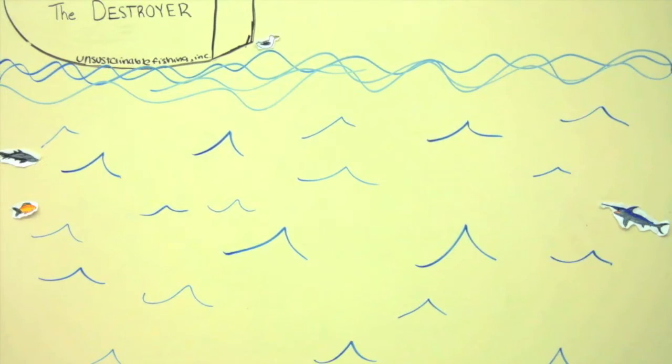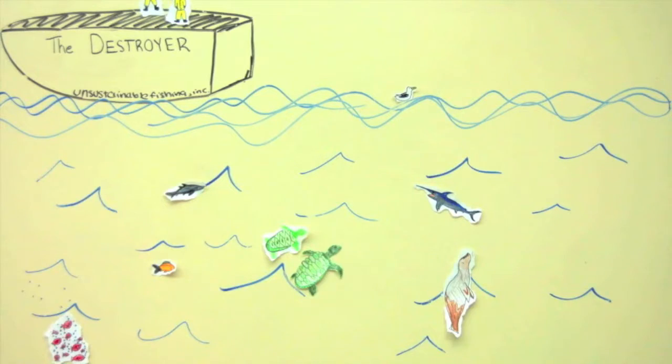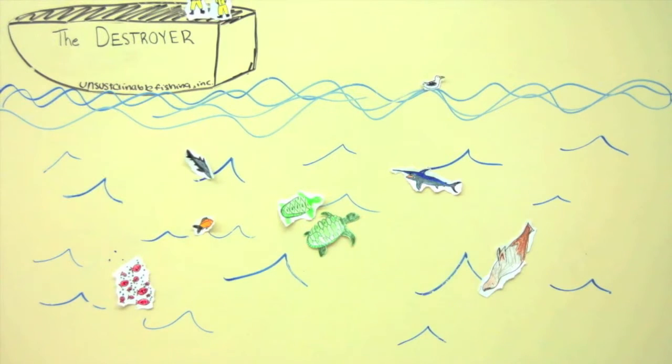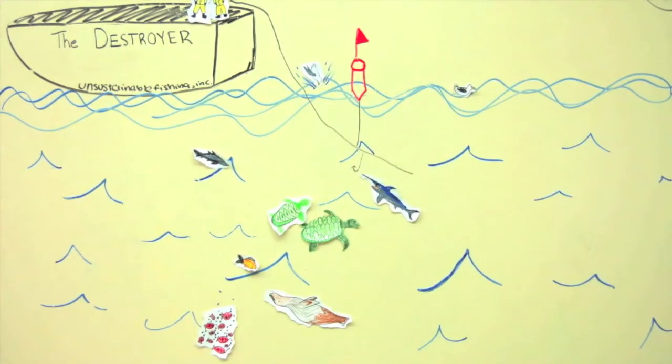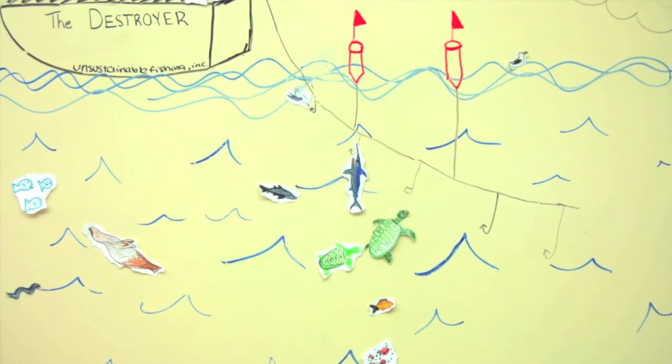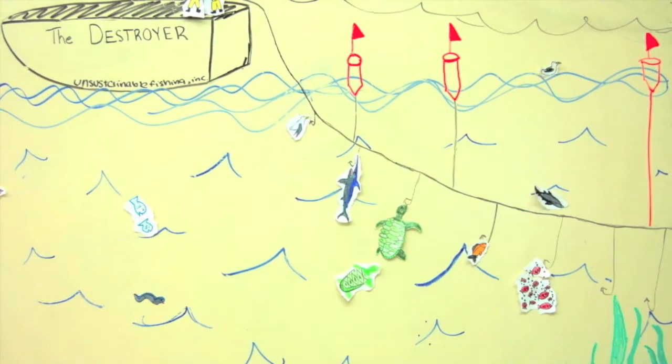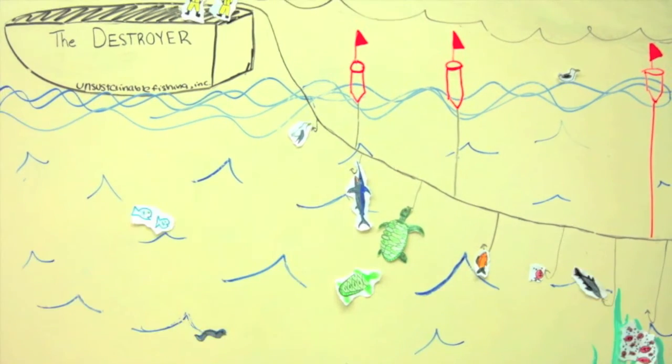In longline fishing, lines are dropped from boats and hooks are submerged up to 3,500 feet underneath the surface of the water. Swordfish and tuna are the target species in most longline fishing, but often times fishermen catch untargeted species, known as bycatch.